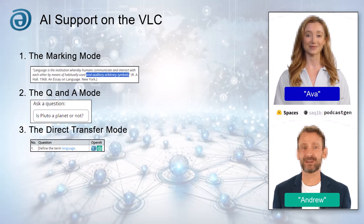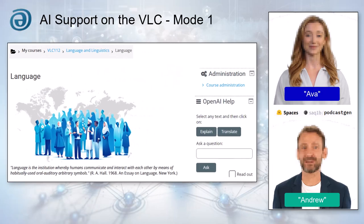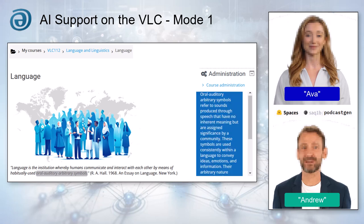Let's start with Working Mode 1. Mode 1 is all about marking and interpreting text. Students can select a passage and use the OpenAI help block to get an explanation or a translation. They can even have the results read aloud, a real boon for auditory learners.